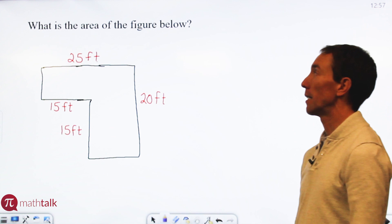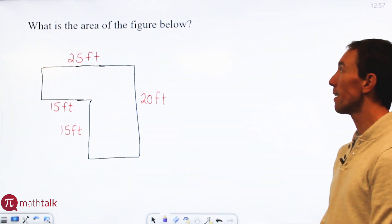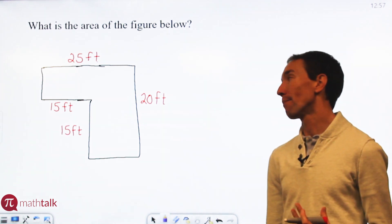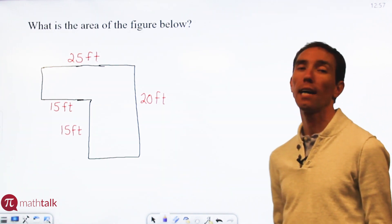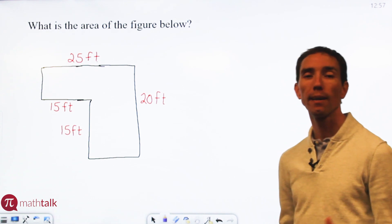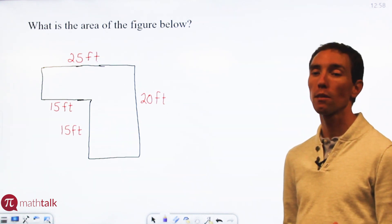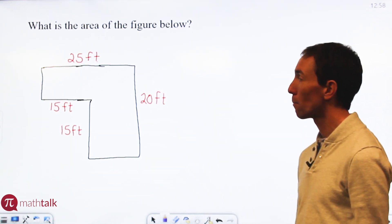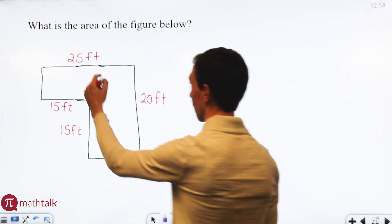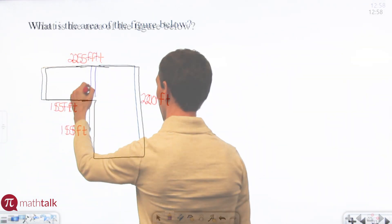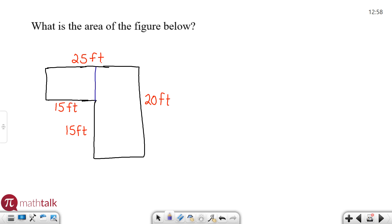I have a geometry problem here for a composite figure asking what is the area of the figure below. When I see composite figures which are basically oddly shaped figures that aren't like a square or a rectangle, I always try and find a way to kind of slice it up into two regular sized shapes. I'm going to go ahead and use that approach to solve this one. So I'm going to divide this one up by drawing a line here.